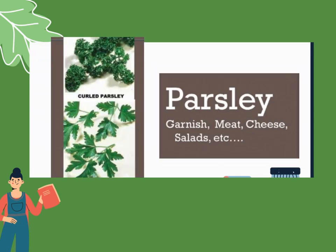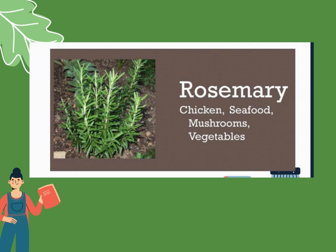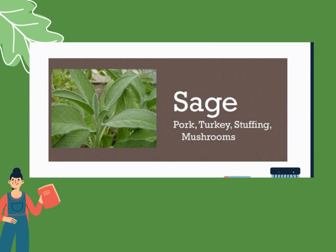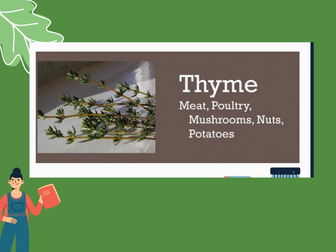Next, parsley. Parsley is used as garnish and also for meat, cheese, and salad. Next, rosemary. Rosemary is used for chicken, seafoods, and you can also add it when preparing mushrooms or any vegetables. Next, sage — native of the Mediterranean and belongs to the mint family. It's used for pork, turkey, stuffing. Next, thyme. Thyme is used for meat, poultry, mushroom, nuts, and potato.